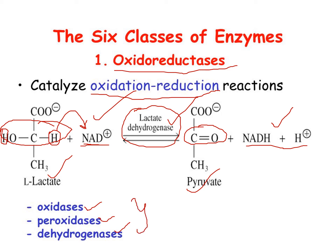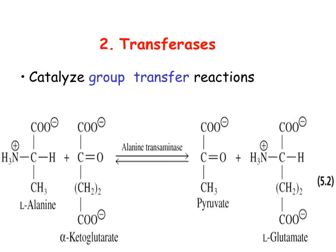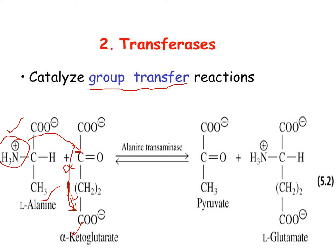The second category is transferases — enzymes that catalyze group transfer reactions. In the example shown, the amino group is transferred from L-alanine to alpha-ketoglutarate. This is a transamination reaction, and the enzyme involved is alanine transaminase. Transferases in general transfer a functional group from one molecule to another.